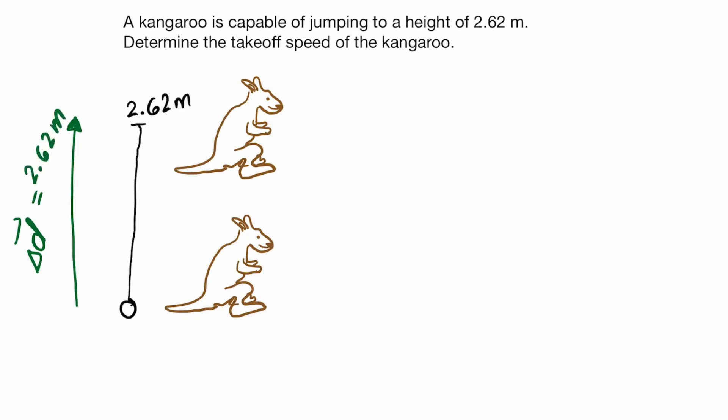Then the next step, we want to draw our velocity vectors. We might want to go back and read the question at this point. This kangaroo is capable of jumping to a height of 2.62 meters and they want us to determine the takeoff speed of the kangaroo. In other words, we don't actually have the initial velocity, so that's going to be our unknown vector.